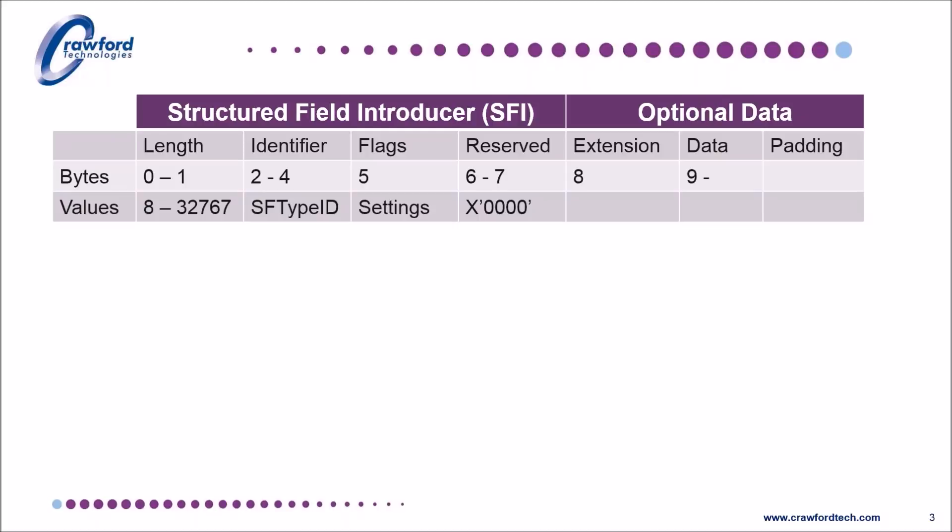Many of these fields and structures were defined in mainframe-only processing days, with fixed length records and storage at a premium, both in memory and on the disk. The current XML, JSON, variable length fields and structures just hadn't been invented.